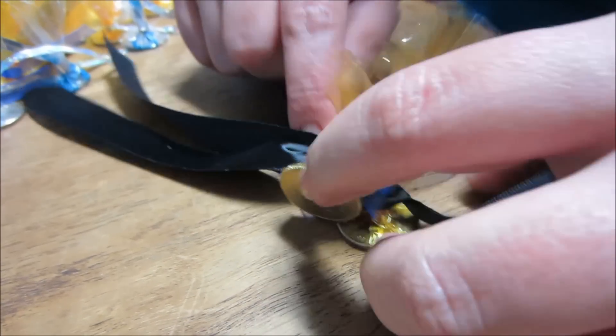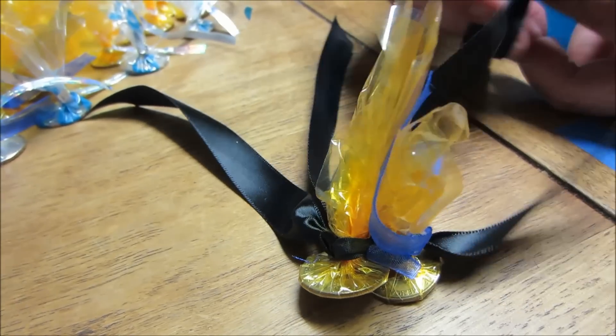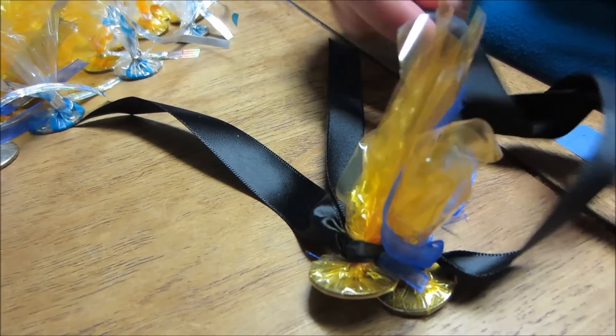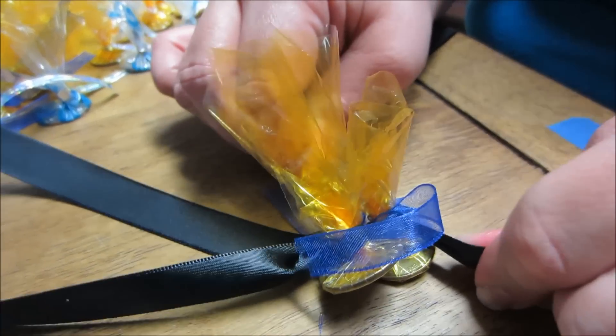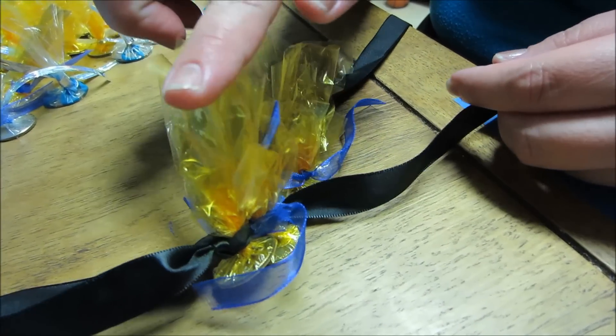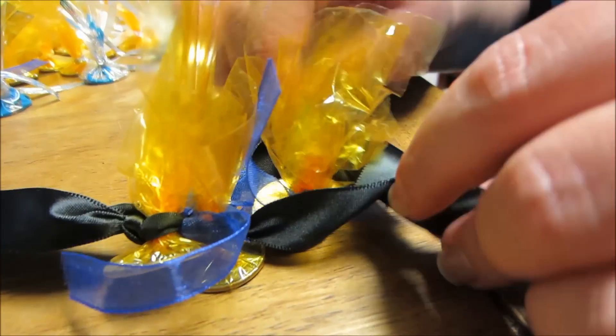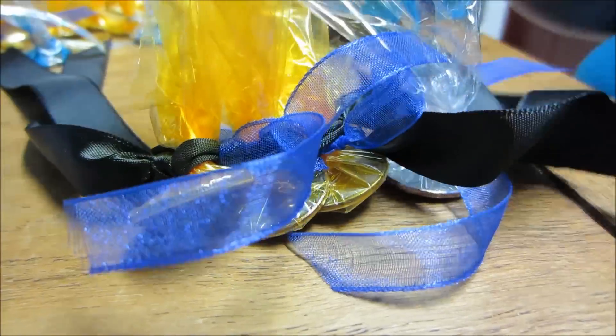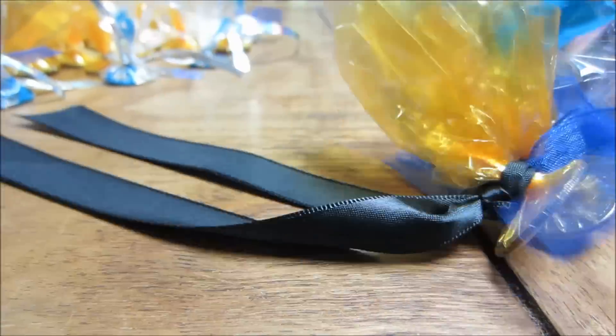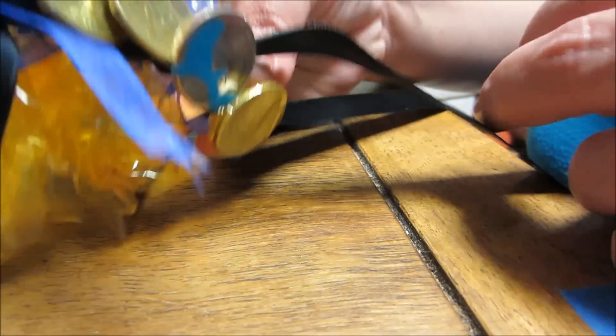When you put the coins in, it's better that you stack them together at the bottom so when you tie it in it'll be nice and neat. Every single one is going to be double tied. My color scheme is three yellow and one blue. As you can see, it's slowly coming together.